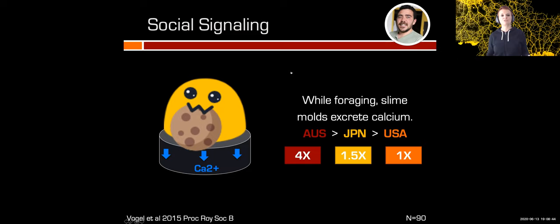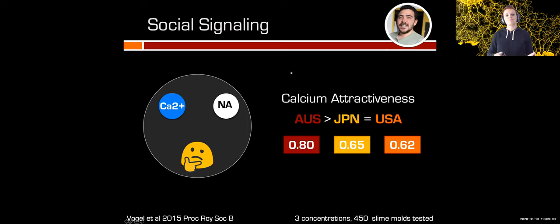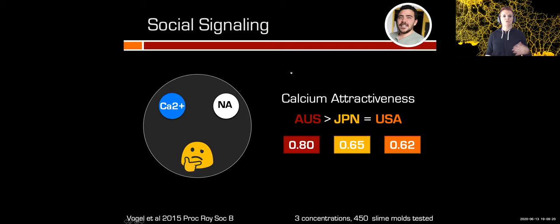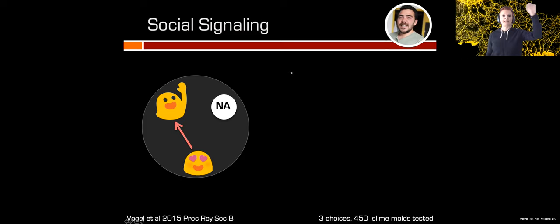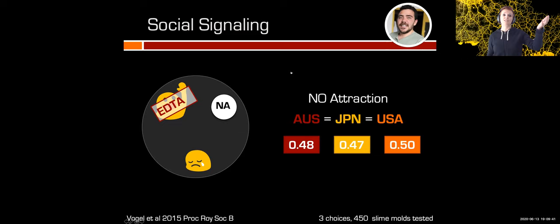We measured the quantity of calcium excreted by each strain and showed that the Australian slime mold releases four times more calcium than the American strain. We also checked whether calcium attraction differed between strains — placing a calcium spot against an empty spot — and found that the Australian slime mold was better at detecting the calcium spot than the American strain. To confirm calcium as the key cue, we repeated the first experiment but added EDTA, which chelates calcium and blocks it on the spot. This time the slime mold was unable to locate the congenial cues and picked randomly between the two spots.